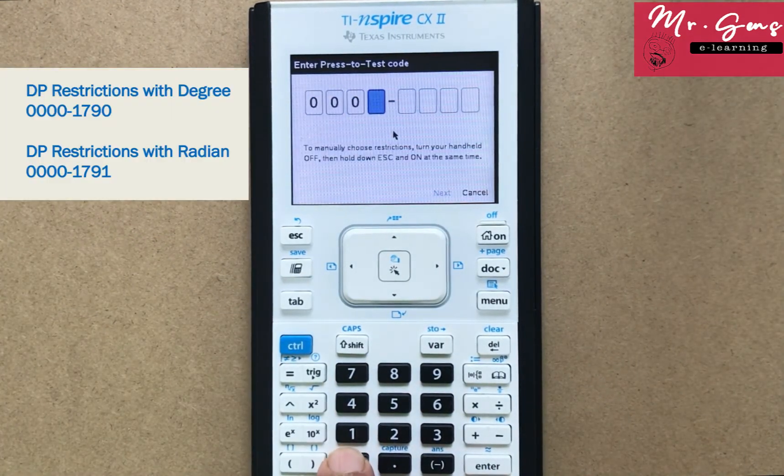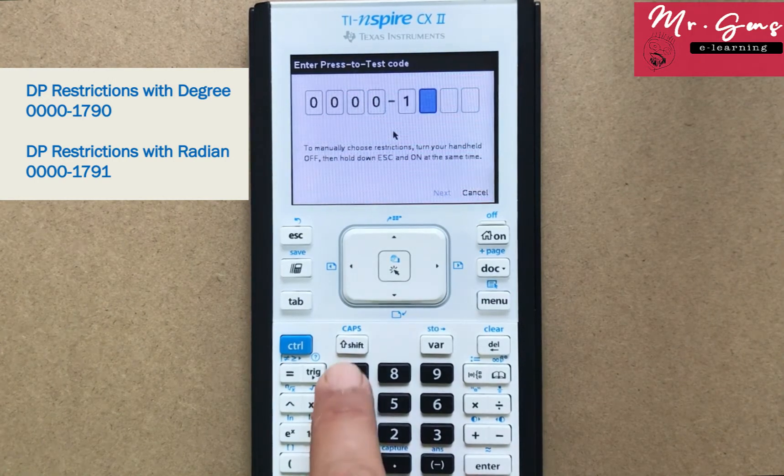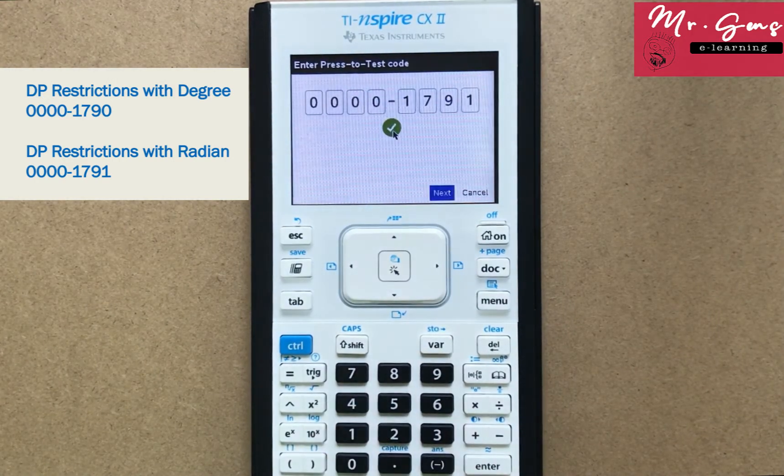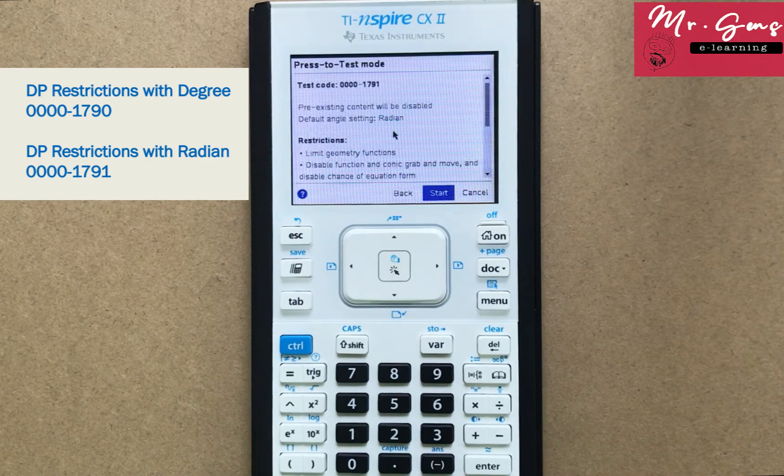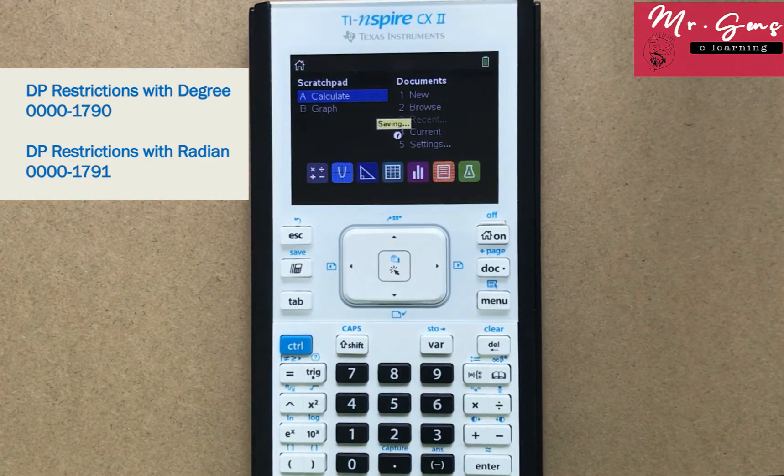If you're an IBDP student, you can use the code that you can see on this screen. Choose the one suitable for you, degree or radian. For other exams, please ask for a code from your teacher.